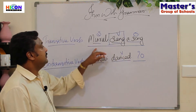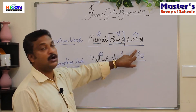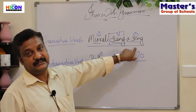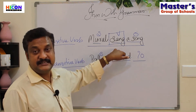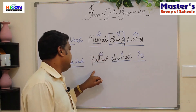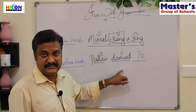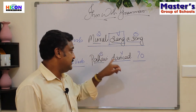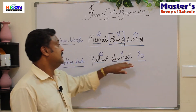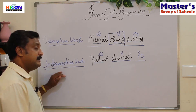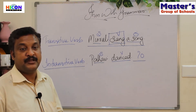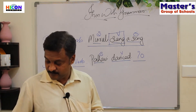So what is an intransitive verb? A verb which doesn't have an object after it is called an intransitive verb. Here, 'Murali sang a song' — sang is a transitive verb. In the second sentence, 'Pallavi danced' — danced is a verb which doesn't have an object after it, so danced is an intransitive verb.